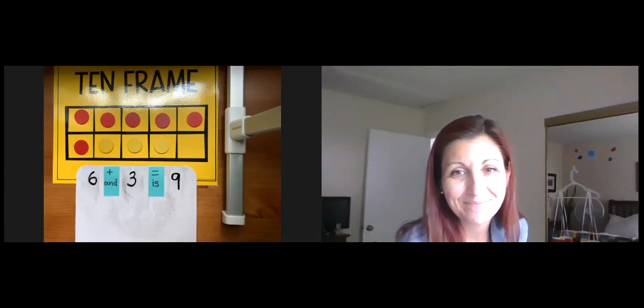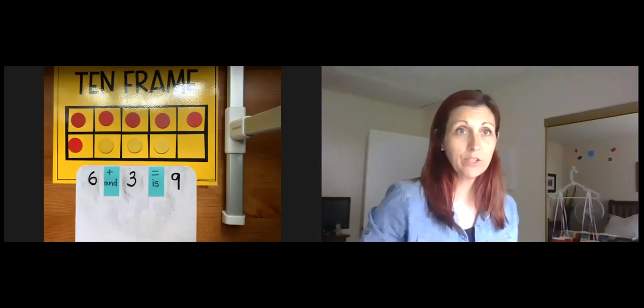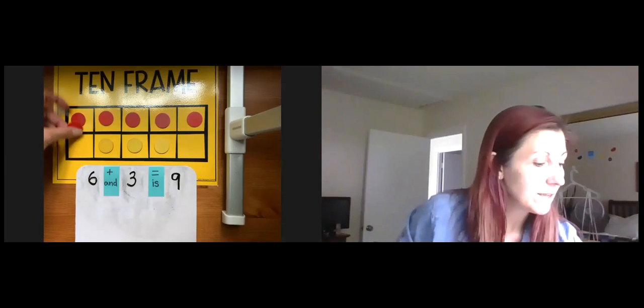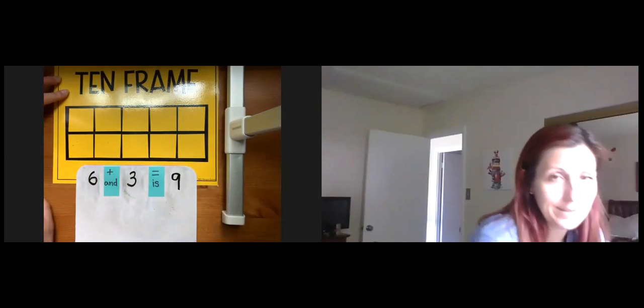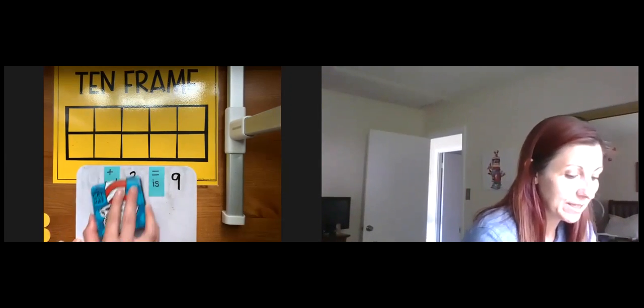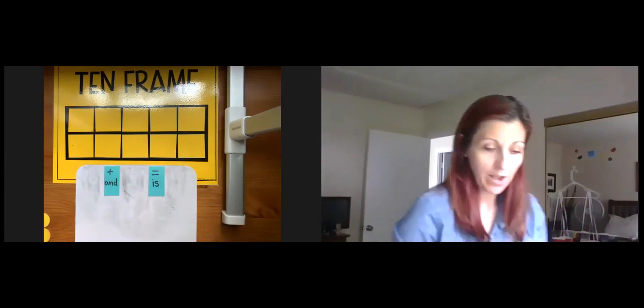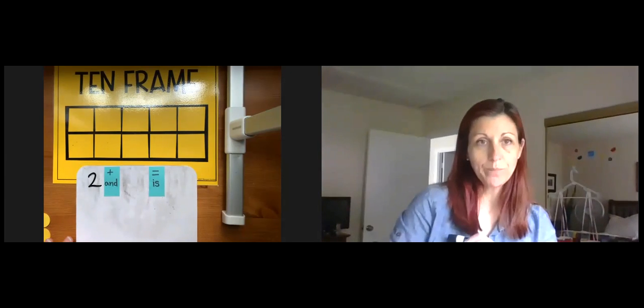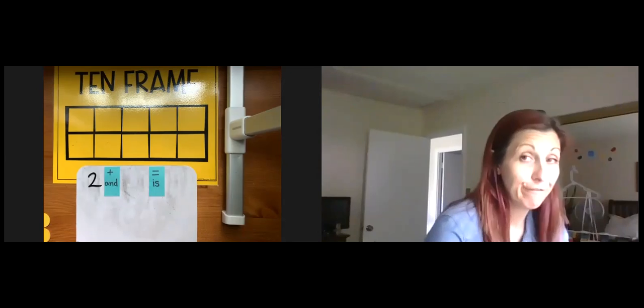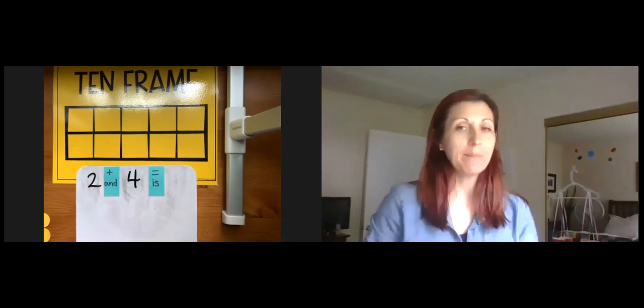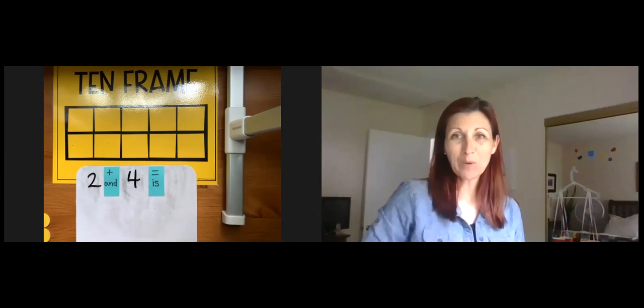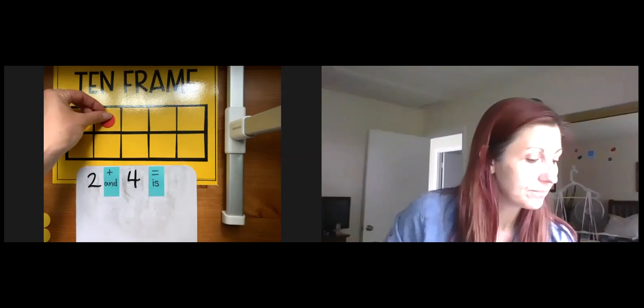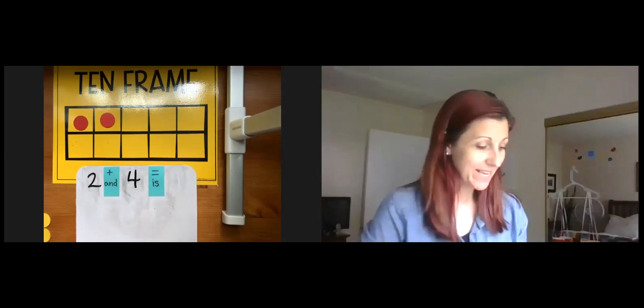Let's try another one. So before I can start a new equation, I need to go ahead and remove all of the counters that were on my 10 frame, because I'm starting completely over. So I'm going to take those, actually I'm just going to sweep them all off to the side. And then I want to erase the numbers, because my equation is going to be different this time. All right, so this time my starting number is going to be two, and I'm going to add four more.